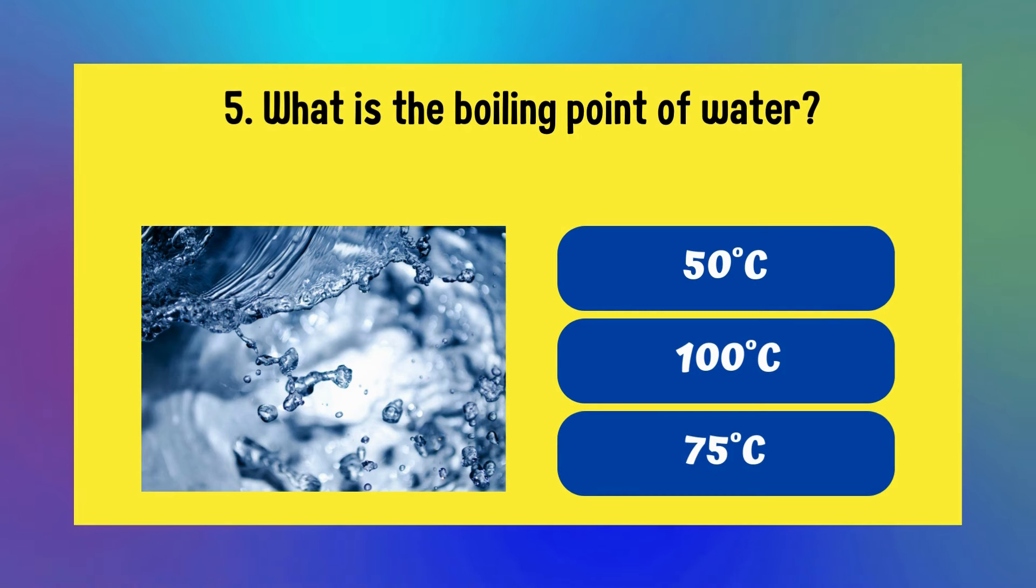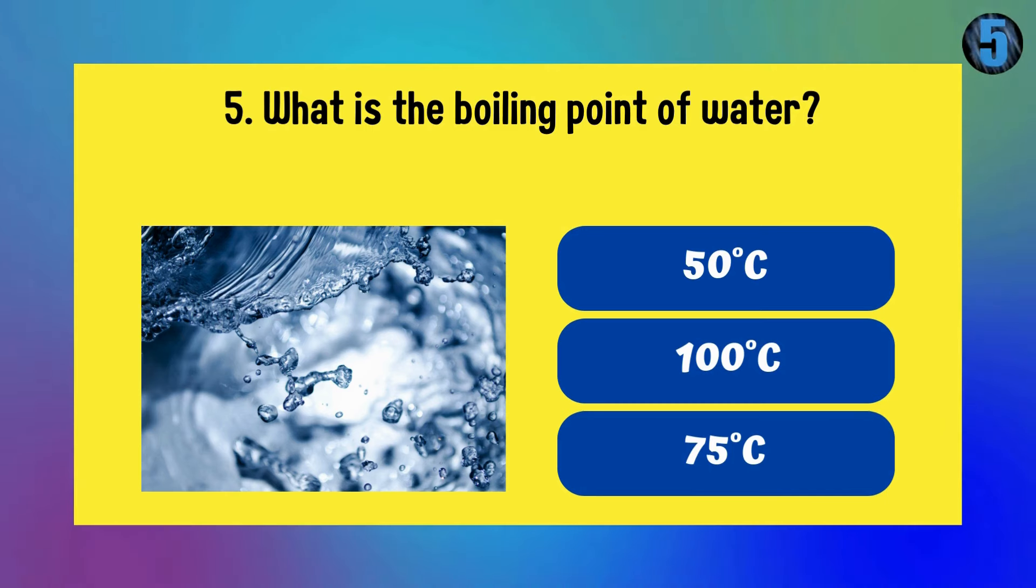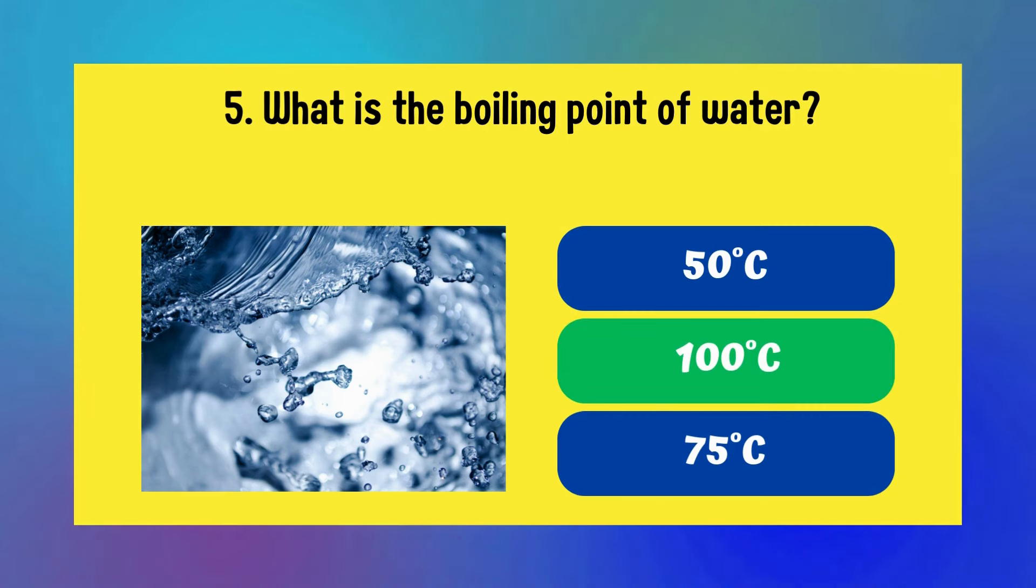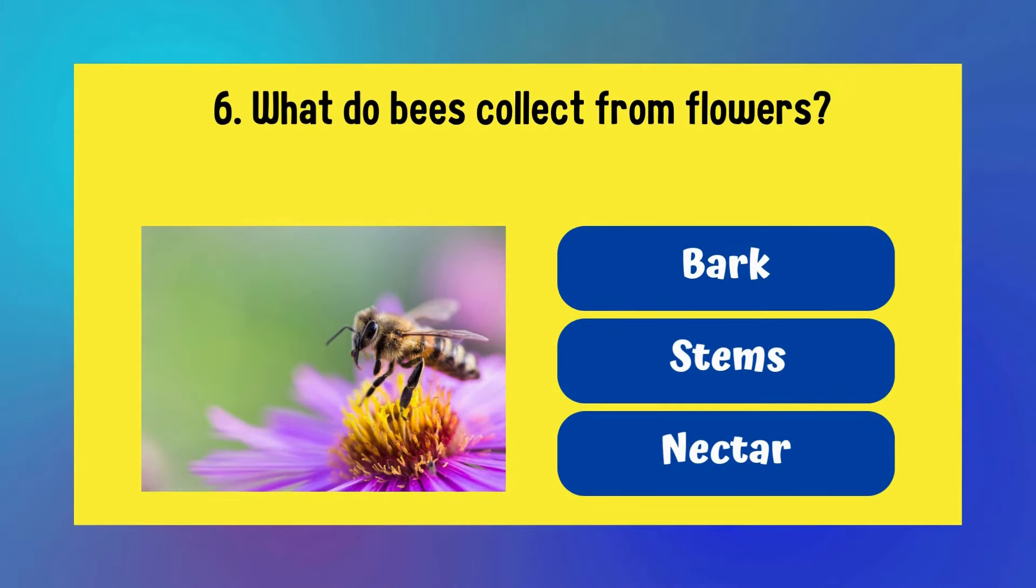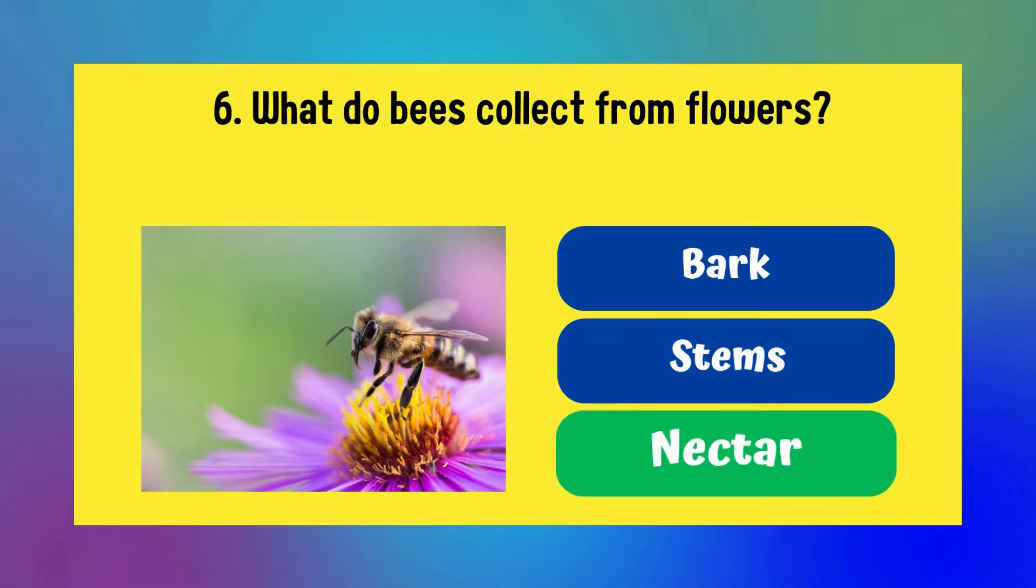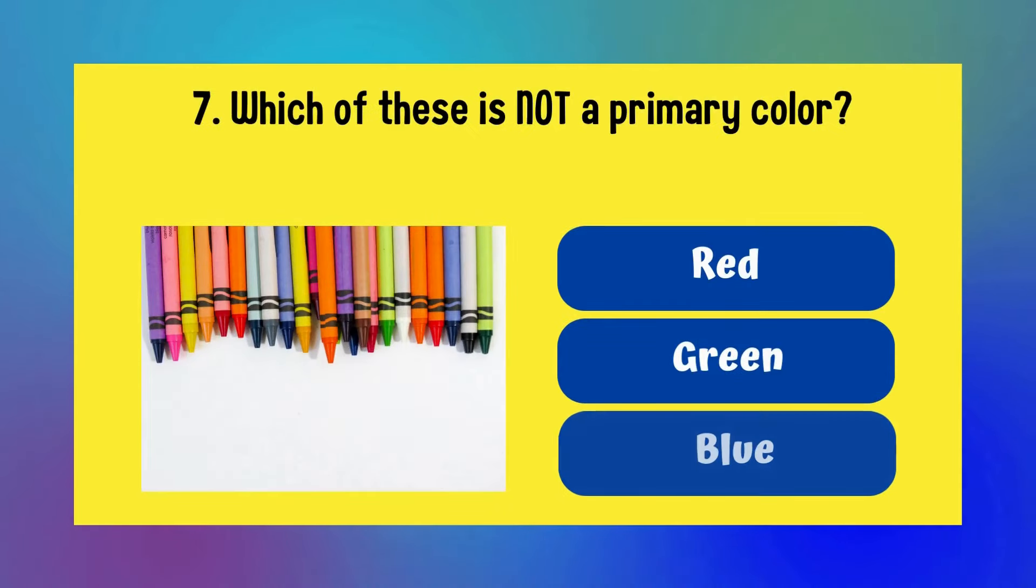What is the boiling point of water? 50 degrees Celsius, 100 degrees Celsius, or 75 degrees Celsius? It is 100 degrees Celsius. What do bees collect from flowers? Bark, stems, or nectar? Answer is nectar.